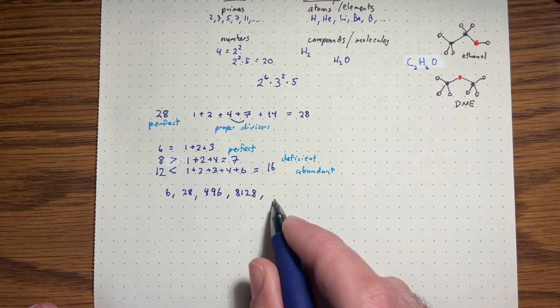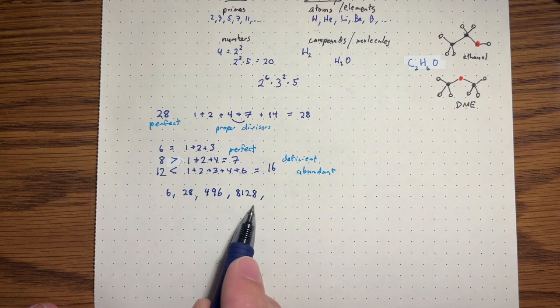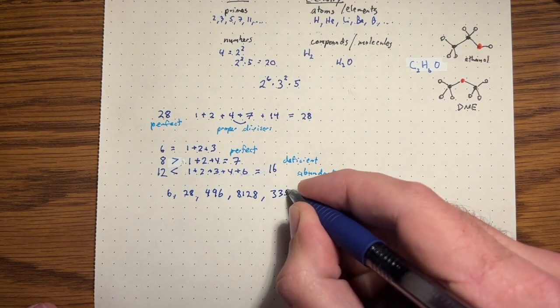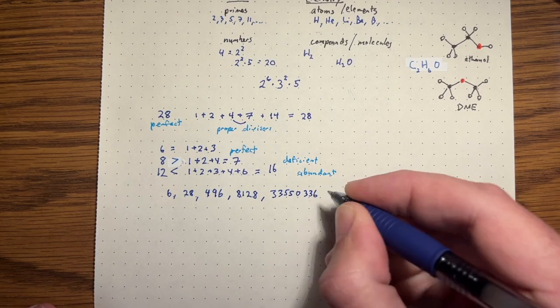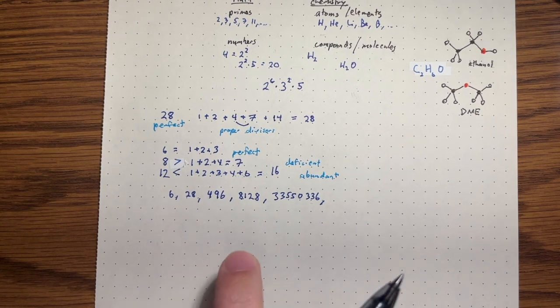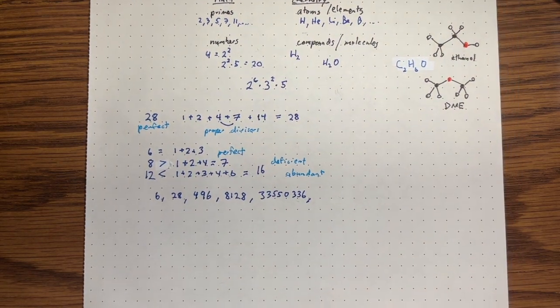And then the next one, we might see the pattern and see we have one digit, two digit, three digits, four digits. Next one's probably gonna be five digits. It's actually 33,550,336. So it's very large and we can already see that a number being perfect is actually extremely rare.